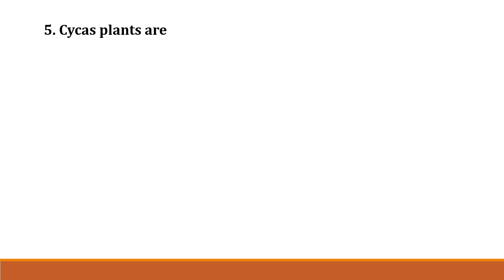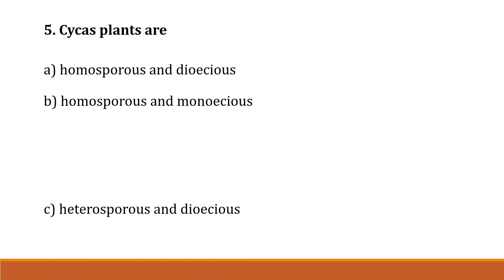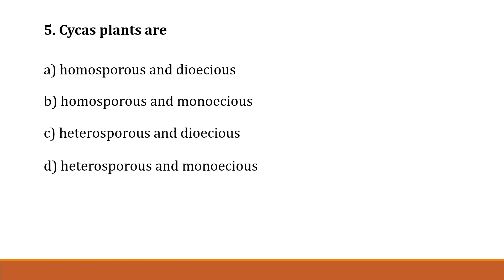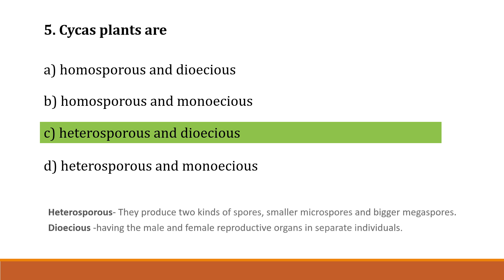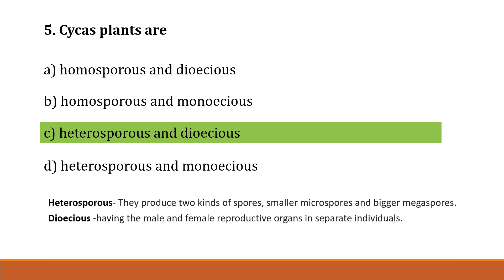Question number 5: Cycas plants are Option A: homosporous and dioecious, Option B: homosporous and monoecious, Option C: heterosporous and dioecious, Option D: heterosporous and monoecious. Correct answer is Option C, heterosporous and dioecious. Heterosporous means two kinds of spores are present — one is microspore and another is megaspore. Monoecious means male and female reproductive organs are present in one plant. Dioecious means male and female reproductive organs are present in separate individuals.